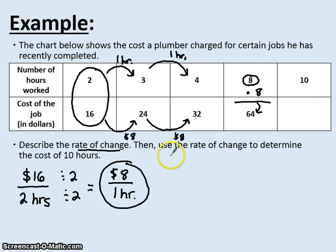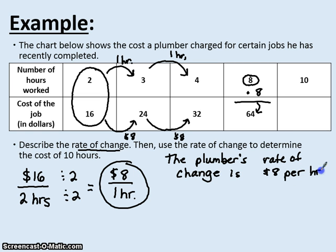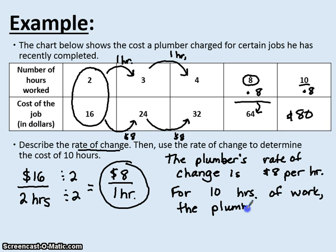So if I were to describe the rate of change, the plumber's rate of change is eight dollars per hour. Now it asks us to go on and use the rate of change to determine ten hours. So if I take ten hours times eight, that would be eighty dollars. So for ten hours of work, the plumber would charge eighty dollars.